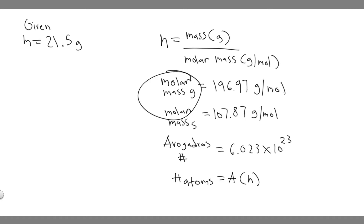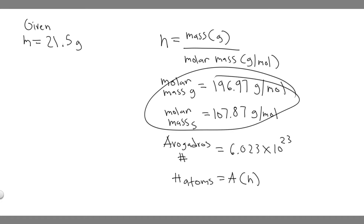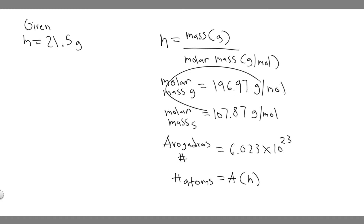The molar mass of gold is 196.97 grams per mole, and the molar mass of silver is 107.87 grams per mole. These are just values you can look up on the internet, or they're probably in your textbook too.